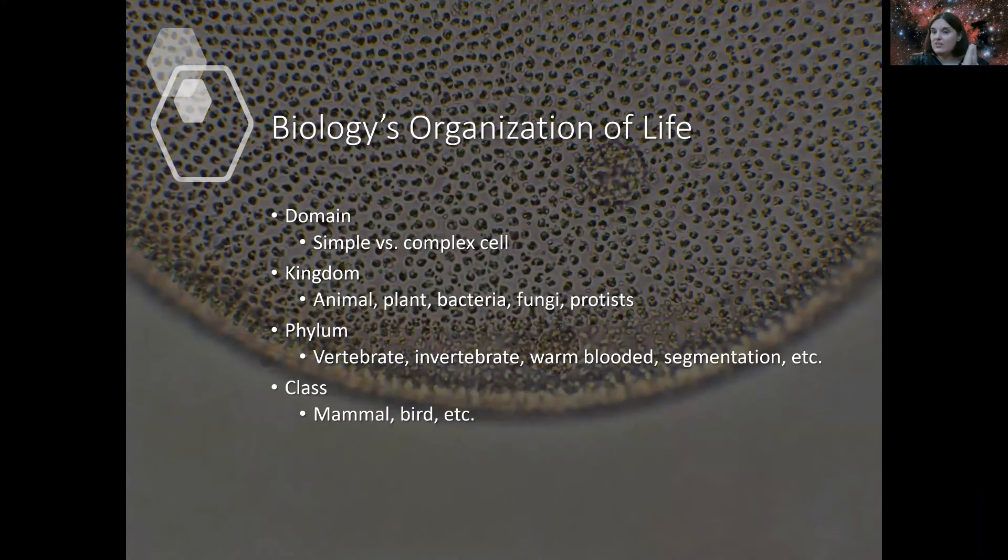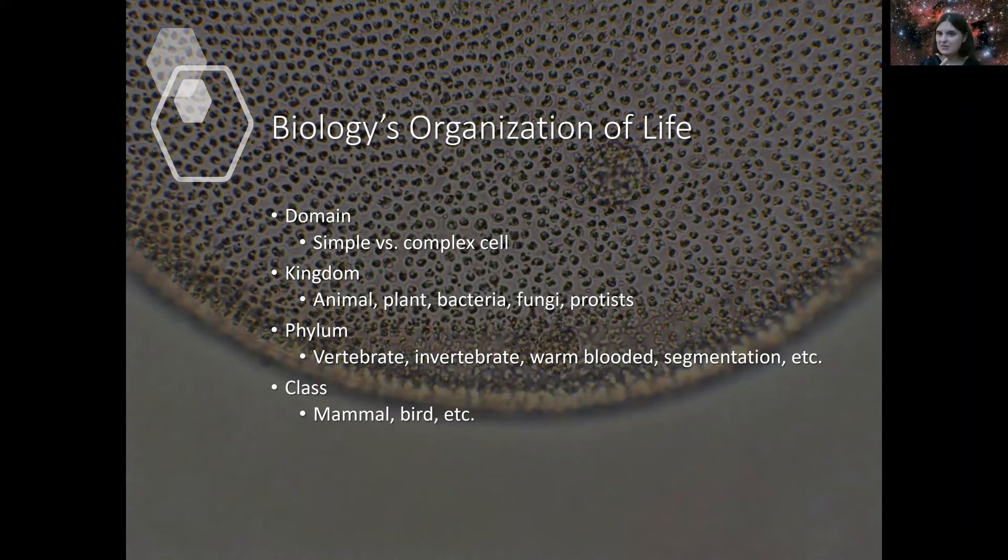So now that we define what is life, let's figure out how we organize things. Because we have such a wide diversity on our own planet, we need to create a system that allows us to organize life specifically. In biology, this is called the biological train, or sometimes it's called the kingdom train, but I've heard it called different names. But call it what you will. Chances are you'll probably come across it in your biology class.